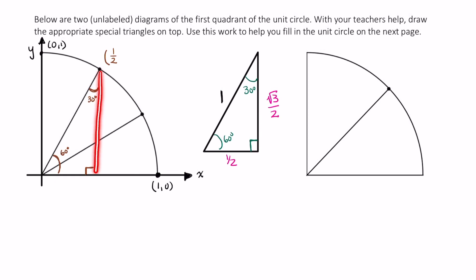This vertical distance is square root of 3 over 2. That means I go from 0 to square root of 3 over 2. That gives me the y value.